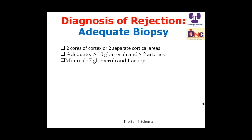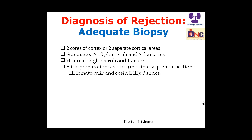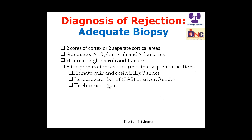A biopsy is considered minimal if it includes seven glomeruli and one artery. For slide preparations: multiple sequential sections — three slides hematoxylin and eosin, three slides periodic acid-Schiff or silver, and one slide for trichrome. All these are the criteria for biopsy sample adequacy and interpretation.